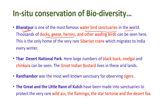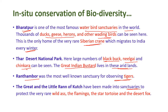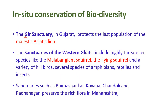Bharatpur is one of the most famous water bird sanctuaries in the world, where thousands of ducks, geese, herons, and other wading birds can be seen. It is the only home for the very rare Siberian crane, which migrates to India every winter. The Thar Desert National Park is home to the blackbuck, nilgai, and chinkara, and the Great Indian Bustard lives in these arid lands. Ranthambore was the most well-known sanctuary for tigers. The Little Rann of Kutch has been made into a sanctuary to protect the wild ass, flamingo, star tortoise, and desert fox.